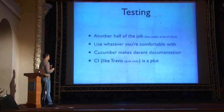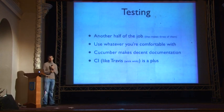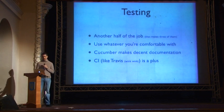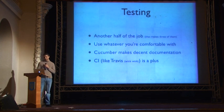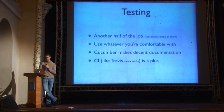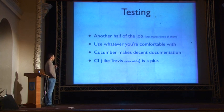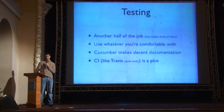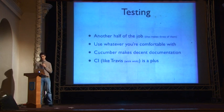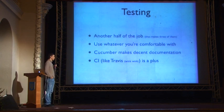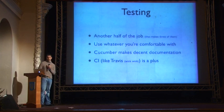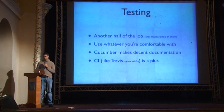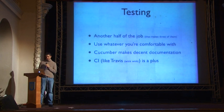Testing a gem is not very different from testing an app — it's just that you should do it more, because people depend on it. You can use any tools you want: minitest, the built-in test suite, RSpec, whatever. Cucumber tests are fairly readable documentation — check out the RSpec documentation, which is just a set of Cucumber stories. You should use Travis or another CI with your gem because it makes you look cool. In my opinion it's not a must, it's a bold should.